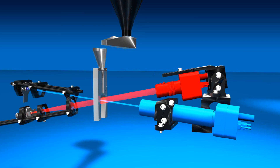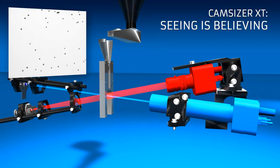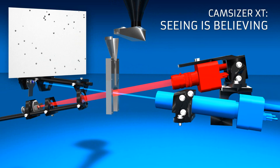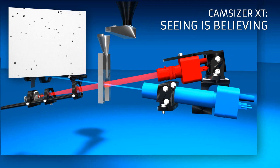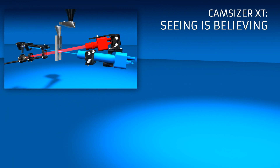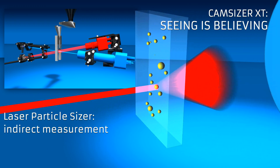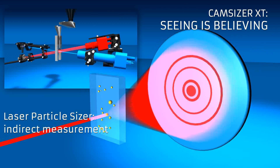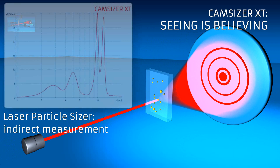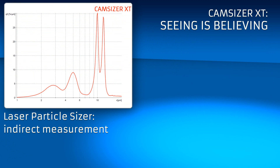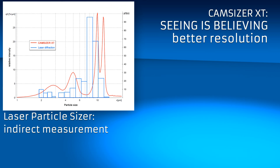The measurement principle of the CamSizer XT is simple and direct — seeing is believing. The information obtained from pictures allows for a much better understanding of the sample properties than the size information calculated by the indirect measurement principle used by laser diffraction analyzers. Whereas the CamSizer XT can resolve mixtures of 2.5, 5, 10, and 12 micrometer particles accurately, this is a serious problem even for state-of-the-art laser scattering instruments.